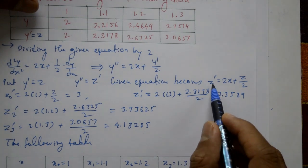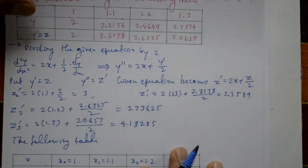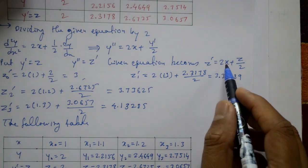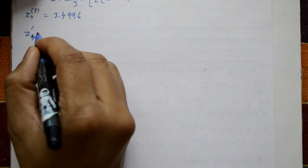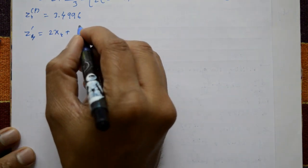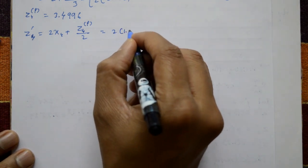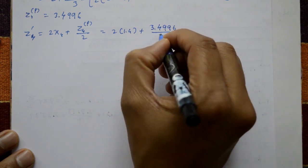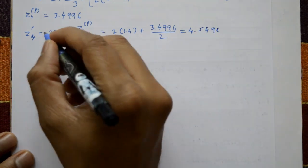Now x4 value is 1.4. Using the equation, we find z4 dash: z4 dash equals 2 times x4 plus z4 predictor value divided by 2 — that is 2 times 1.4 plus 3.4996 divided by 2 — which equals 4.5498. This value will be used in the corrector formula.